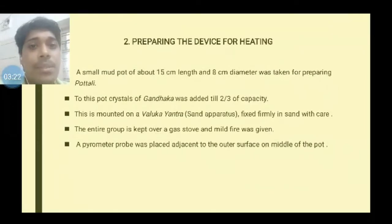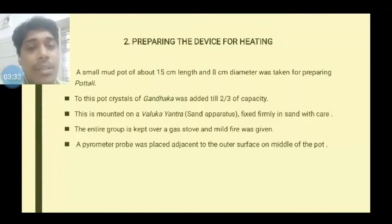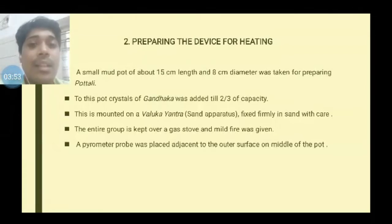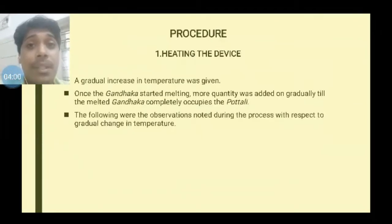The second pre-procedure step is the preparation of the heating device. A mud pot is used, approximately 15 cm in height and 8 cm in diameter. Two-thirds of the pot is filled with Gandhaga crystals, which serve as the heating medium. This is mounted on a valuka yantra — a sand apparatus where sand is used as a medium for heat transfer. The entire setup is placed on a gas stove and fire is given. A pyrometer is kept touching the middle portion of the mud pot to obtain the most accurate temperature readings.